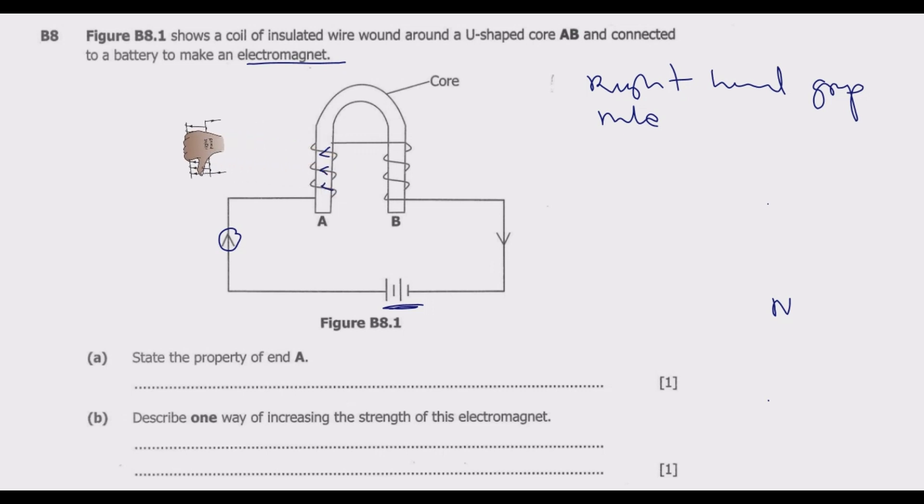Then these are fingers pointing in the direction of the current, which is in this direction. What you notice in this case is the thumb is pointing downward. So A should be north. Then if A is north, this should be south. North pole.